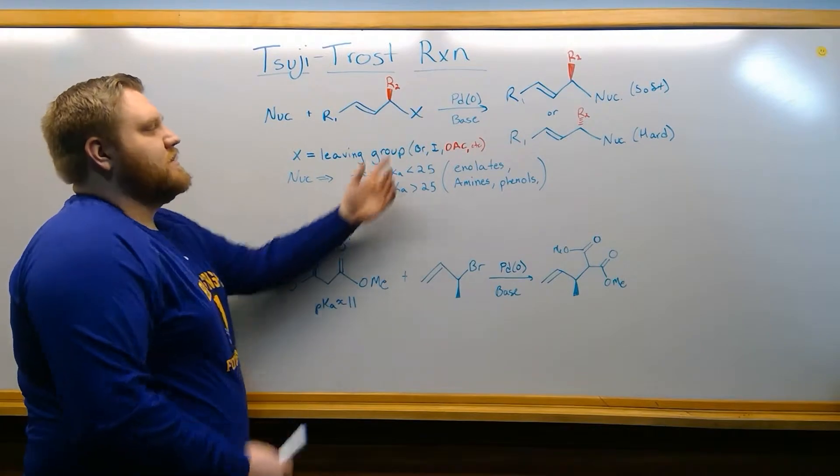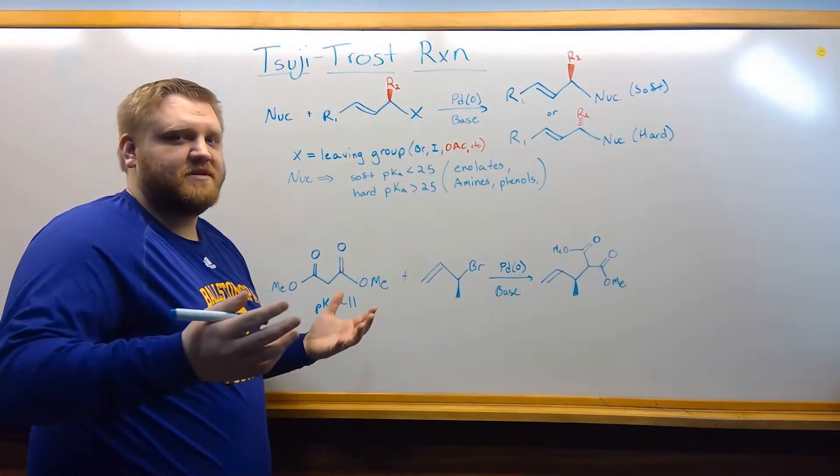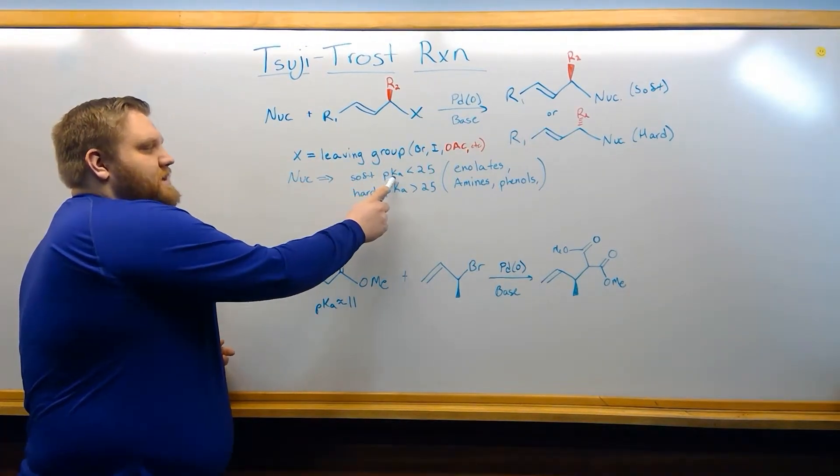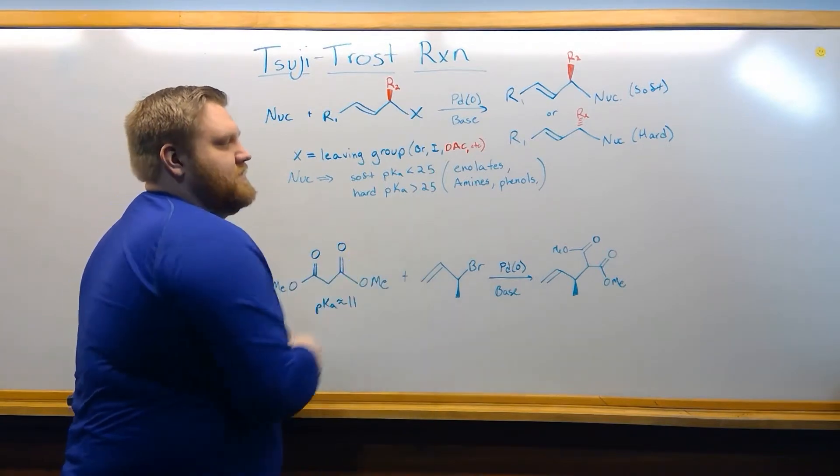Our leaving groups are our halogens, but they can also be acetoxy groups or simpler esters, and our nucleophiles, our soft ones, have a pKa less than 25, and our hard ones have pKa greater than 25.